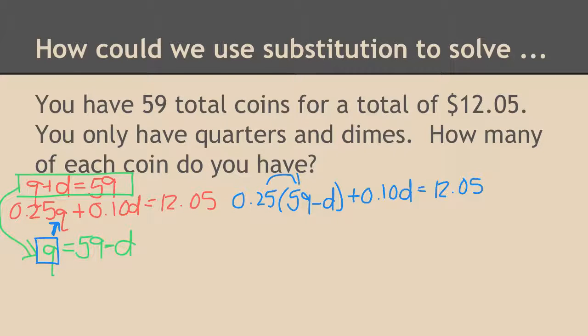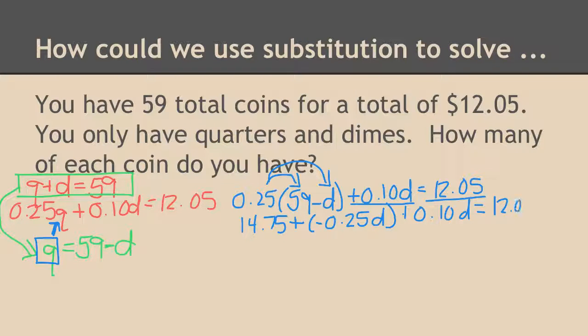It's time to substitute. 25 cents times 59 is going to give me 14.75 and 25 cents and a negative d would give me negative 25 cents d and then I still have this 10 cents d and I still have this. So all I did was I distributed. Now I'm going to put like terms together. The 14.75 is unaffected but when you add negative 25 cents times d and positive 10 cents times d I'm going to get a negative 15 cents times d equals 12.05.